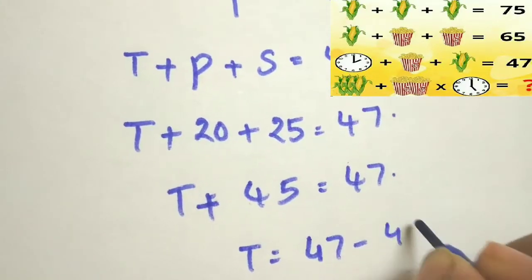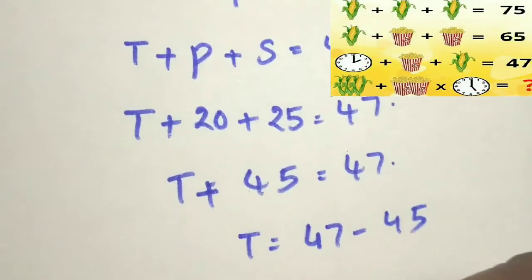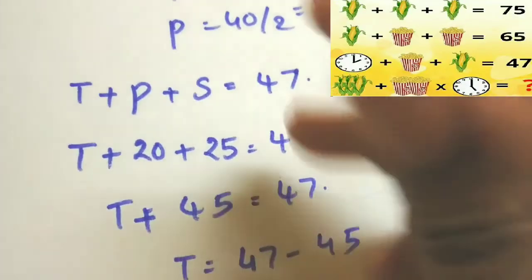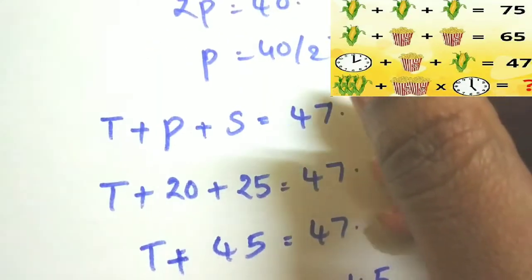So T is equal to 47 minus 45, T is equal to 2 you will get. The coincidence is the time clock is showing 2 only in the diagram. We have to observe that one.